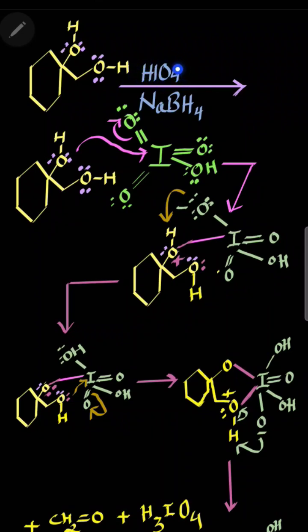The first step of the reaction is the very famous Malaprade reaction. We will see how the mechanism goes. These are the lone pairs present on the oxygen atom — as you know, oxygen always carries two lone pairs. One of those lone pairs will form a bond with the iodine present in the periodic acid.